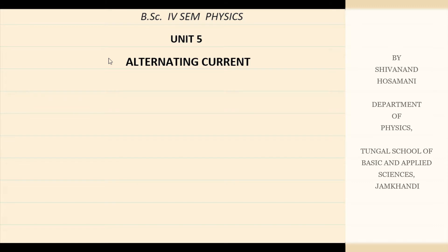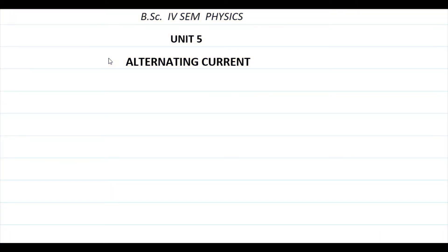Hello everyone, welcome to BSc 4th Semester Physics class. I'm Siwan and Dospani. Today we are going to start the fifth unit, called alternating current, or AC source and AC circuits. Before starting, let us see what syllabus we need to cover in this unit, and later we will discuss some problems.